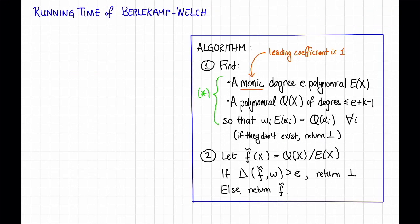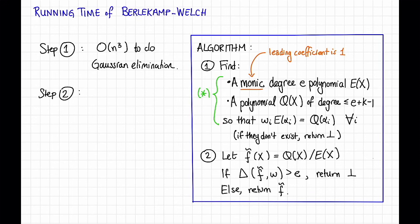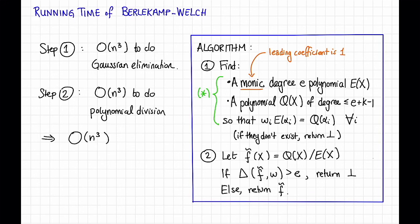Finally, let's look at the running time of this algorithm. To do step one, we need to set up and solve a linear system. That takes time O(n³) to do Gaussian elimination. To do step two, we just need to divide one polynomial by another, which can also be done in time O(n³). So the total running time is O(n³), where n is the block length of the Reed-Solomon code. This is great — in particular, it's much faster than the naive algorithm of trying all codewords and seeing which one is closest. However, there are faster algorithms out there, such as the Berlekamp-Massey algorithm mentioned in an earlier video, which can run in time O(n²) or even faster depending on implementation.